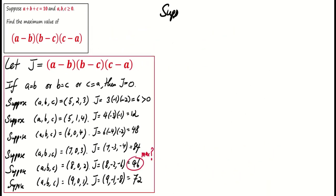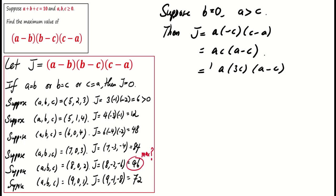Building on this observation, consider the case where b equals zero and a greater than c. Now, J becomes ac times (a minus c). To solve this, we'll apply the AM-GM inequality. But first, let's modify the expression. We can write J as 1 over 3 times a times 3c times (a minus c).